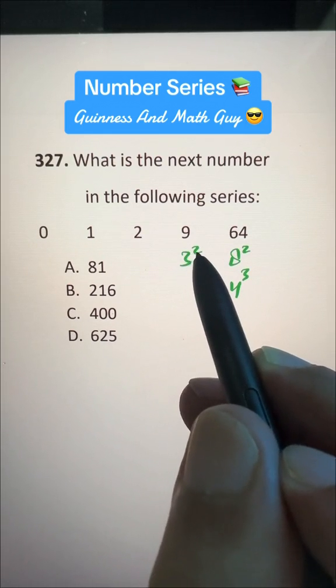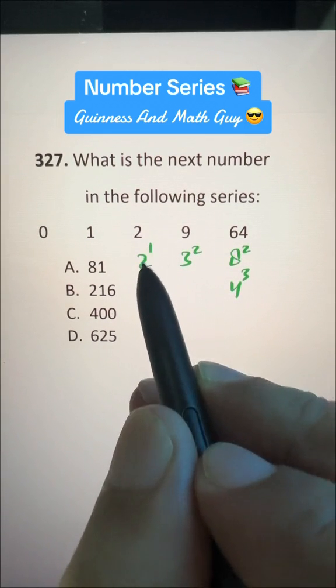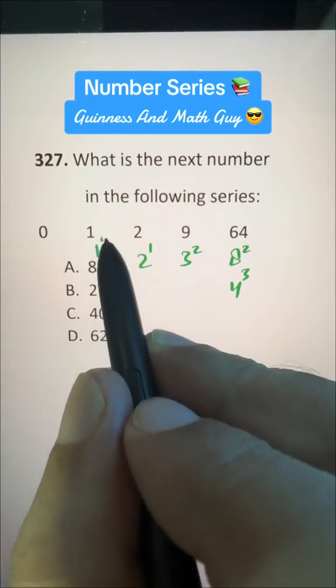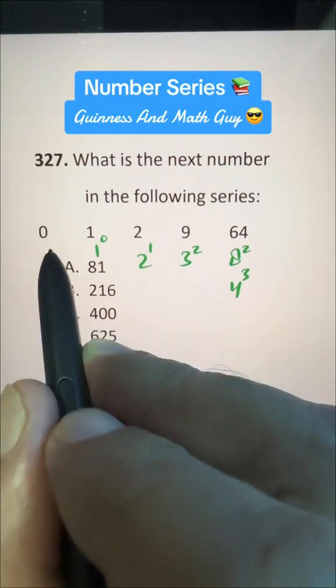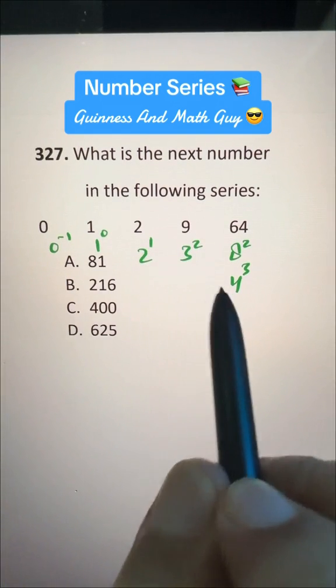3, and then 1 less than 3 is 2. So 1 less than 2 is 1. So this tells us 1 to the power of 0 is 1, and 0 to the power of minus 1 is 0. So we have 0, 1, 2, 3, 4.